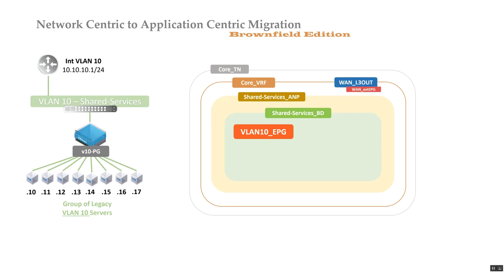I also create a layer 3 out, which is a peering or adjacency — a layer 3 connection out of the VRF, just like in traditional networks where you need a connection out of the VRF, whether peering with a firewall, a fusion router, or something similar. In this case I create a WAN layer 3 out that peers with a firewall or router. On the WAN layer 3 out I also define external EPGs.